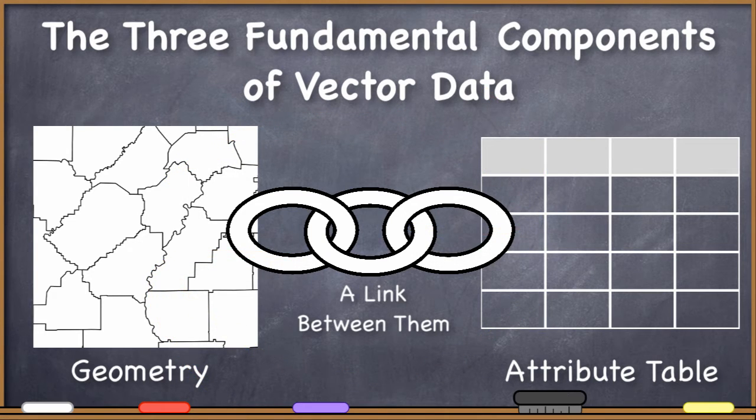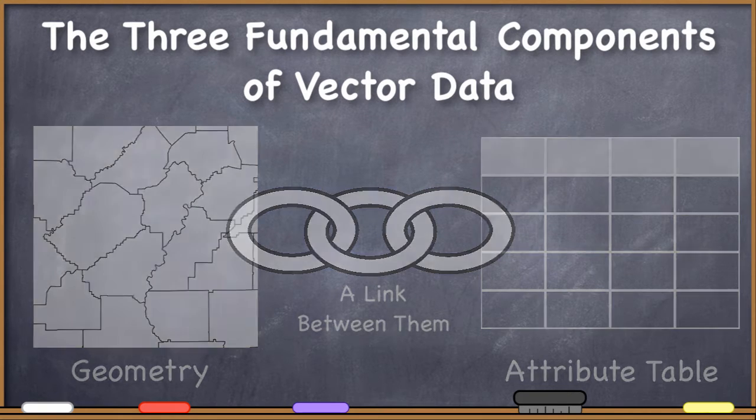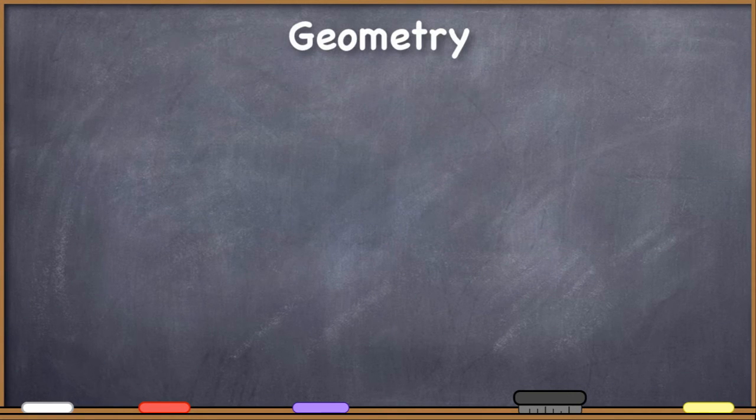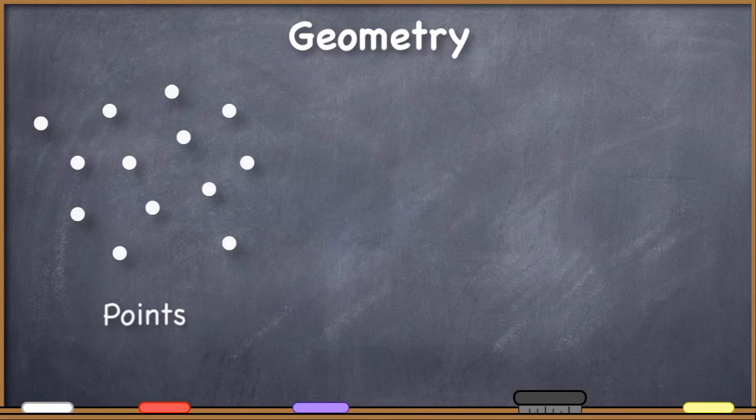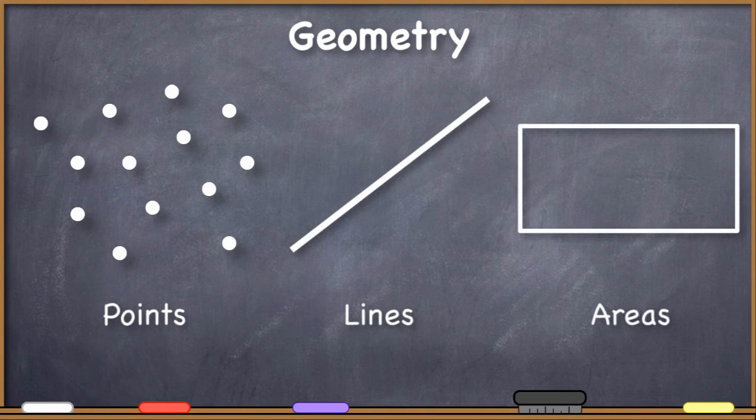I want to take a look at both the geometry and the data tables in a lot more detail. So first, let's take a look at the geometry. Whenever you think of the vector data model, you should think about points, lines, and areas. These are the three geometric representations that we can use for two-dimensional GIS analysis. It's very common to do geographic information systems analysis in two-dimensional space.